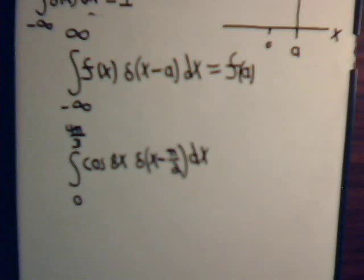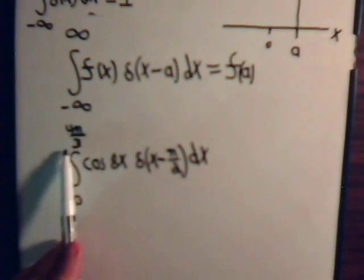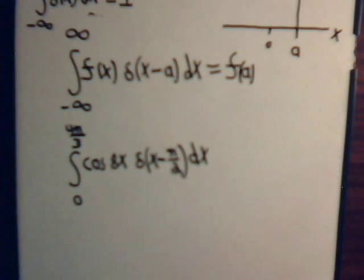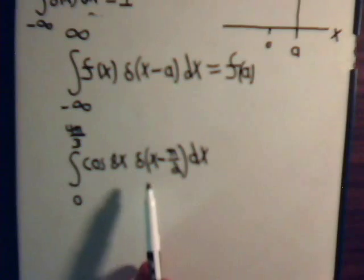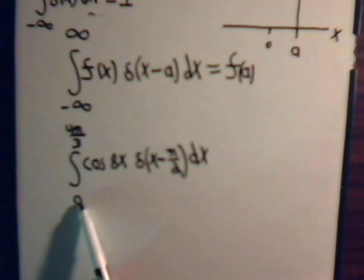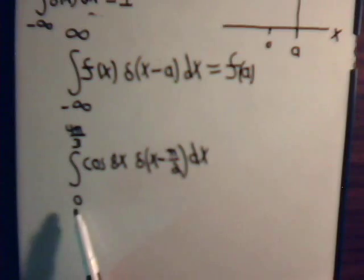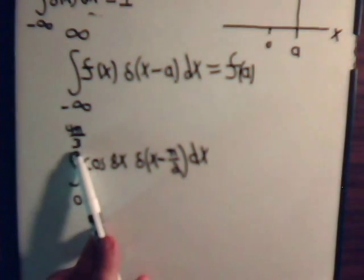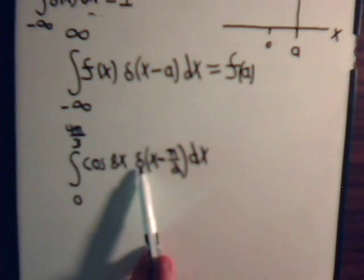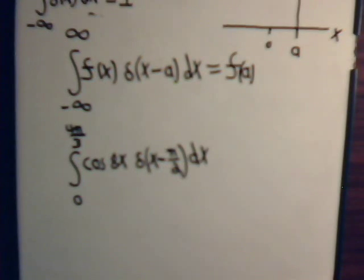Like this. Now, here we're summing values of x from 0 to 4 pi over 3. That includes pi over 2. This is going to be 0 over all those possible values of x that exist from 0 to 4 pi over 3, except when x equals pi over 2.